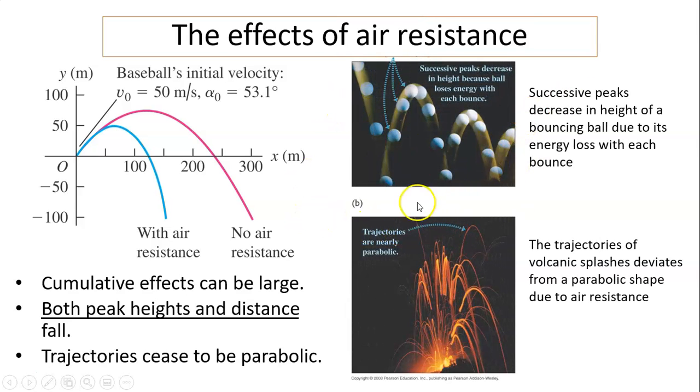Here are examples for a bounced ball. As you can see, the height is getting lower and lower. This is because every bounce, the ball loses energy. And that the path is not parabolic, slightly off. For a trajectory of volcanic splashes, the trajectory also deviates from parabolic shape due to air resistance.